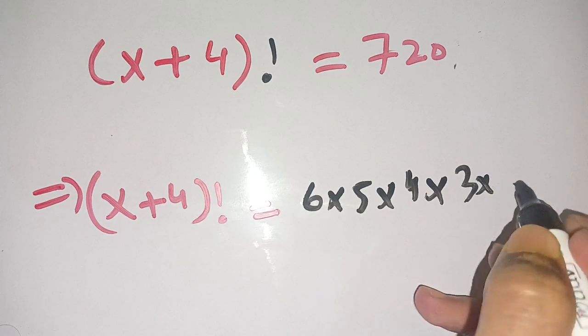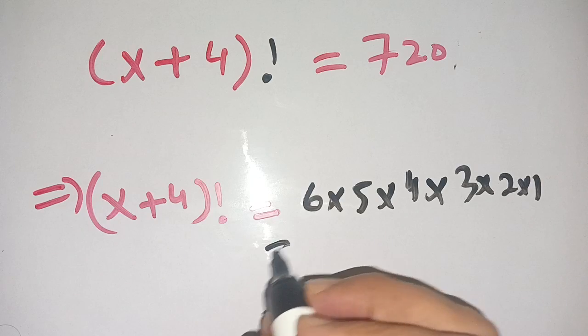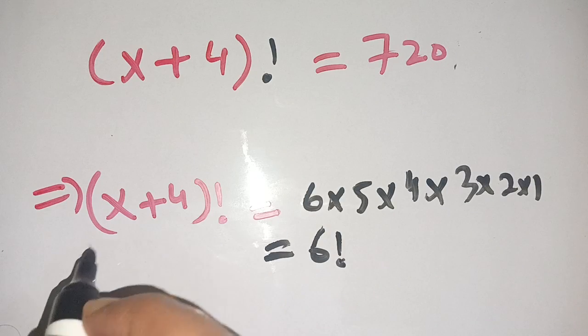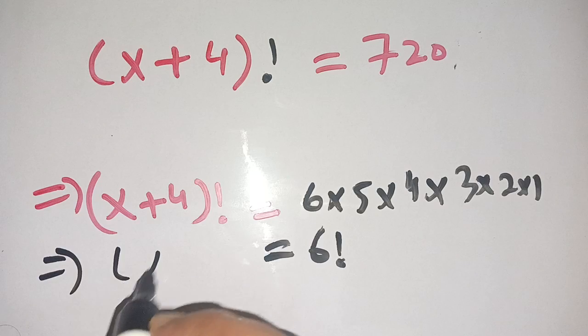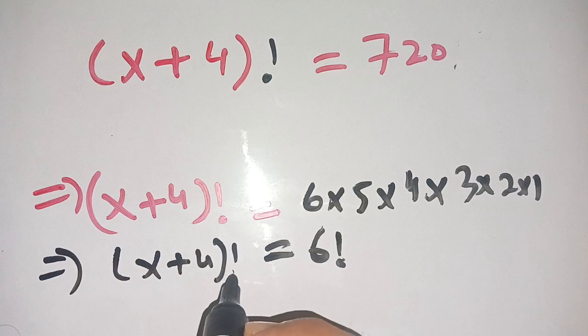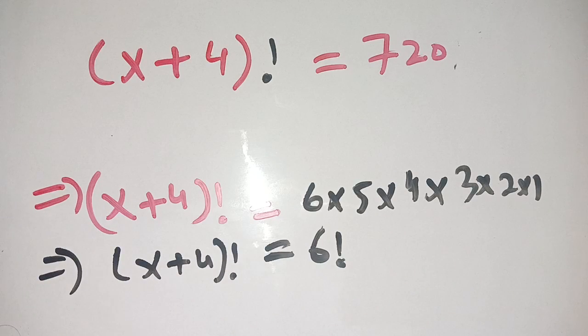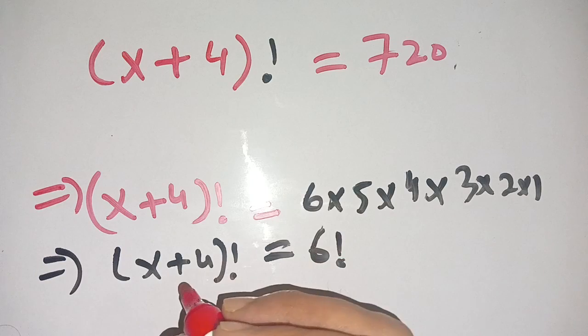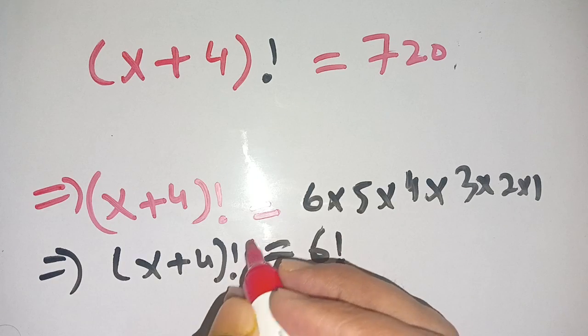This means that it is equal to 6 factorial. Now we have (x+4)! is equal to 6!. As we know that if x factorial is equal to y factorial, we can cancel out this factorial and this factorial.